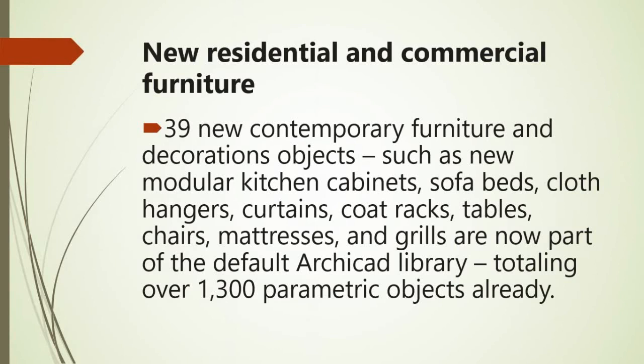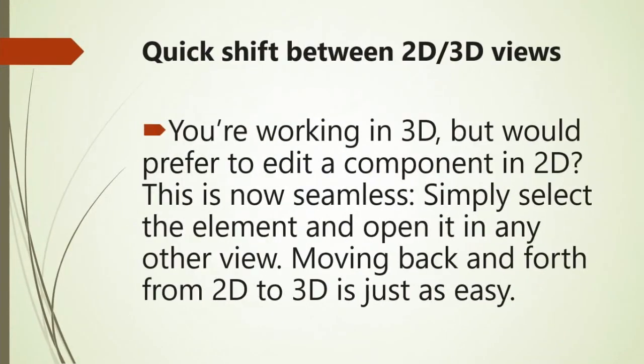New objects include modular kitchen cabinets, sofa beds, cloth hangers, curtains, coverlets, tables, chairs, mattresses, and grills — now part of the default ArchiCAD library, totaling over 1,300 parametric objects already in ArchiCAD.